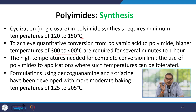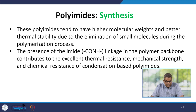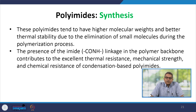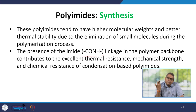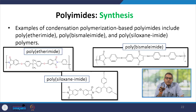Formulations using benzoguanamine or S-triazine have been developed with more moderate baking temperatures of 125–205°C. These polyimides tend to have higher molecular weights and better thermal stability due to elimination of small molecules during polymerization. The presence of the imide C-O-N-H-C linkage in the polymer backbone contributes to excellent thermal resistance, mechanical strength, and chemical resistance. Examples of condensation polymerization-based polyimides include polyetherimide, polybismaleimide, and polycycloxy imide.